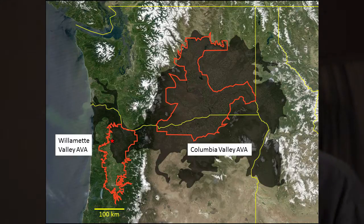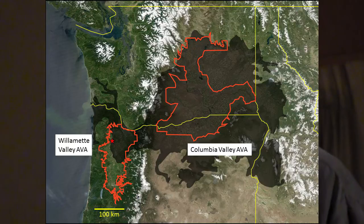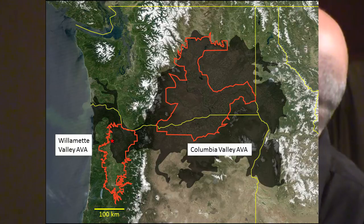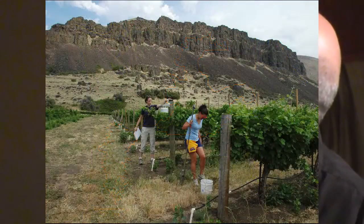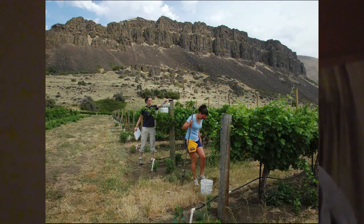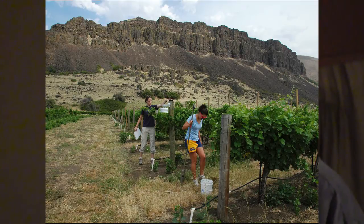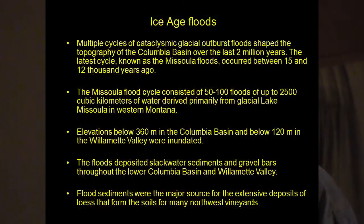There's the Columbia Valley AVA and the Willamette Valley AVA for scale. This is Cascade Cliff Vineyard in the Columbia Gorge with basalt cliffs in the background.